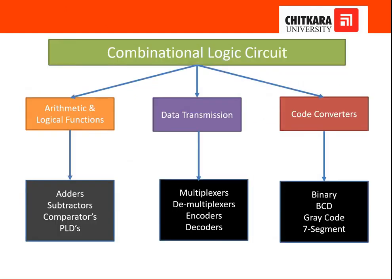Examples of combinational logic circuits fall into three categories: arithmetic logical functions, data transmission, and code converters. The ALU is found in computing devices for adder, subtractor, and comparison operations. Data transmission uses multiplexers, demultiplexers, encoders, and decoders. Code converters handle binary, BCD, Gray code, and seven-segment representations. These are the main application areas for combinational logic circuits.